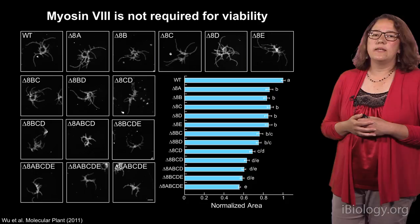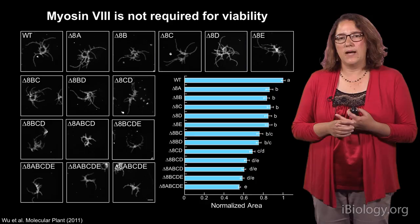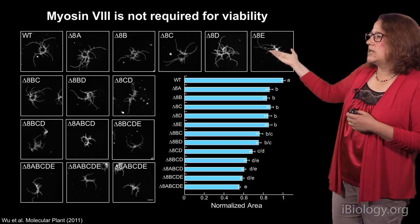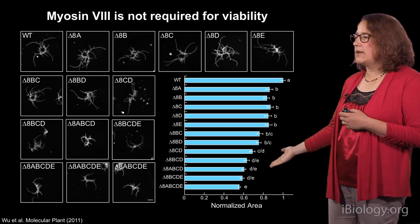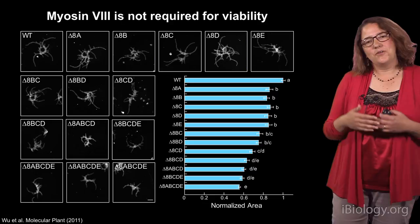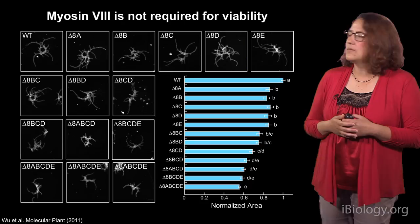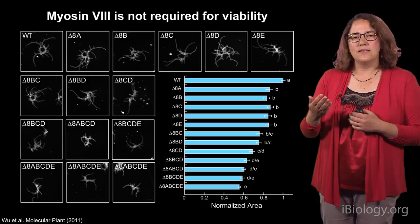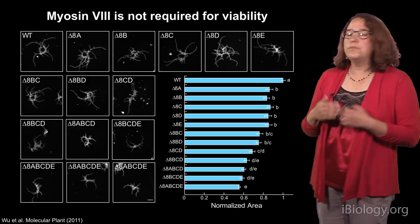We generated a panel of mutants using homologous recombination, knocking out the myosin 8 genes — single knockouts, double knockouts, one triple knockout, two quadruple knockouts, and at the bottom, regenerating plants of the quintuple knockout, where we knocked out all five class 8 myosins. The first surprise is that you can live without class 8 myosins, but why hold on to five genes if you can live without them? These myosins are not essential for viability, though there are some differences. These plants are about five to six days old, and the single mutants are all a little bit smaller, with the quintuple knockout being about 58% the size of wild type — so there is a growth defect.